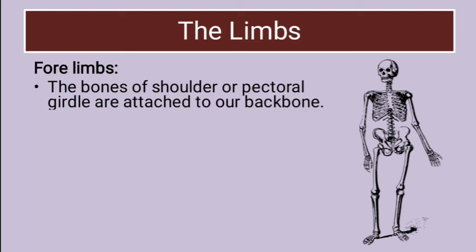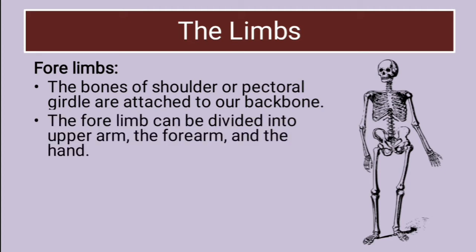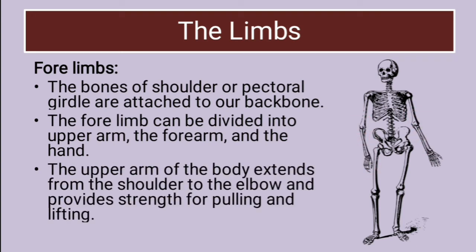Talking about forelimbs, the bones of the shoulder or the pectoral girdle are attached to our backbone. The forelimbs can be divided into the upper arm and the forearm. The upper arm of the body extends from the shoulder to the elbow and provides strength for pulling and lifting.